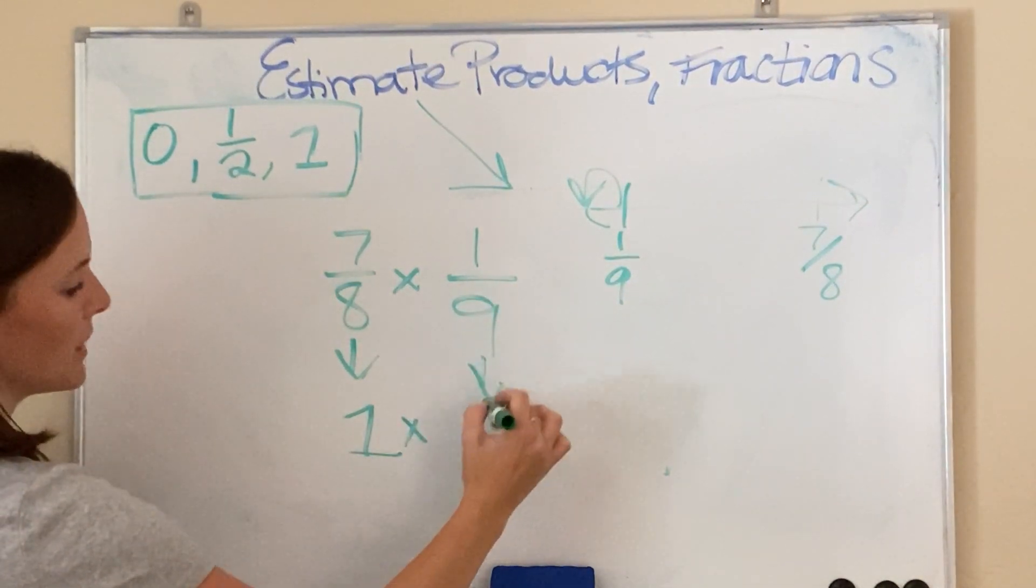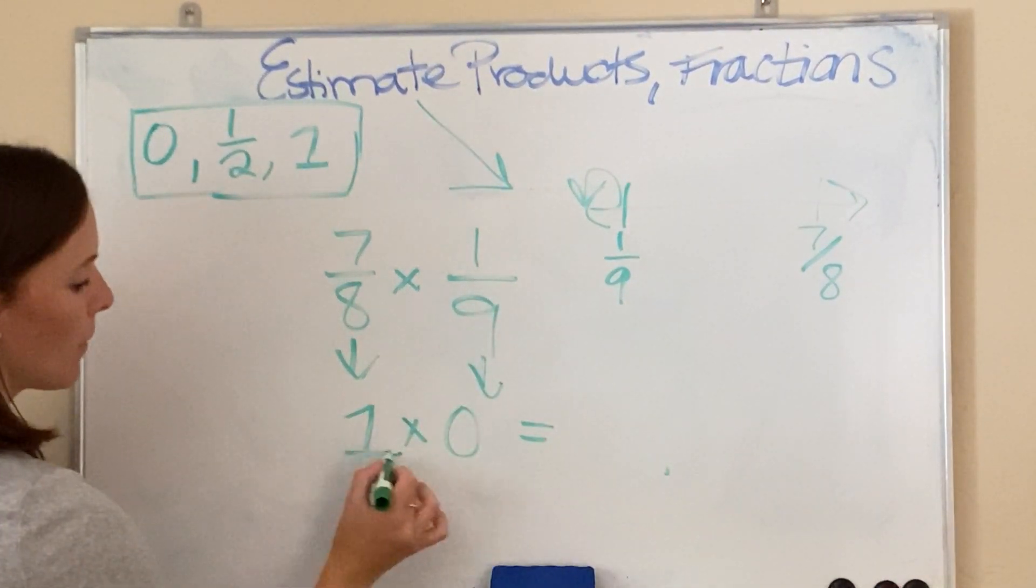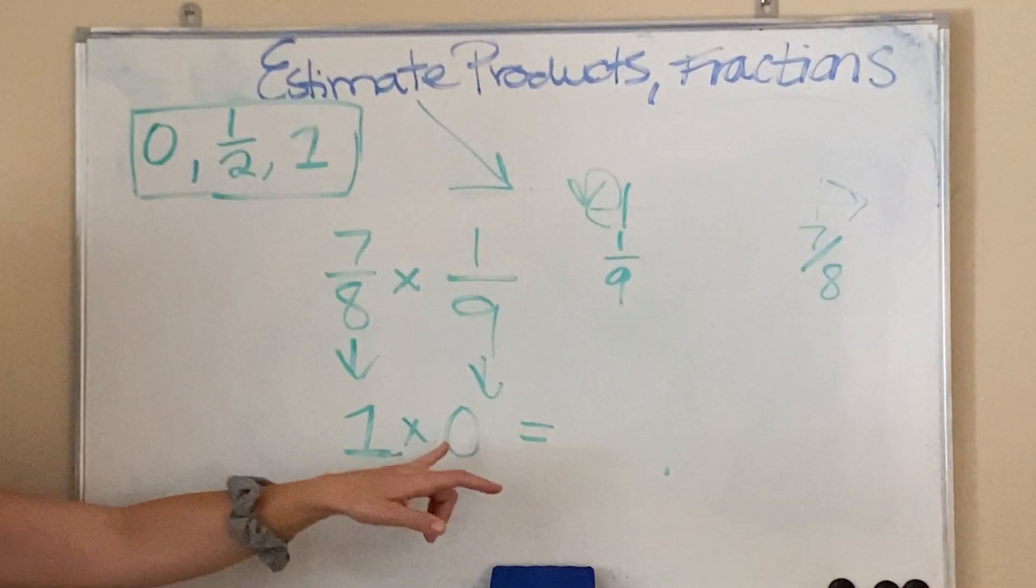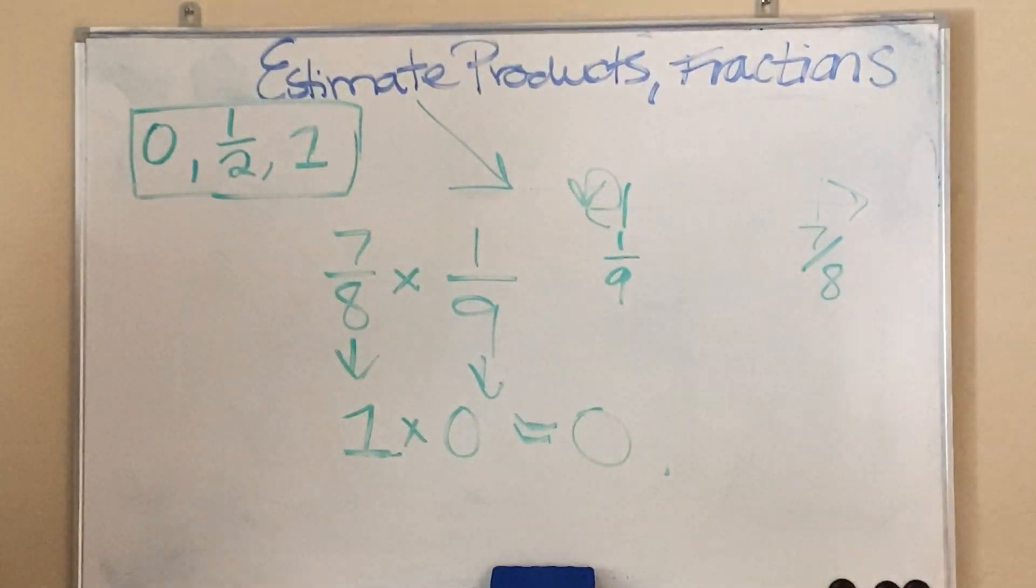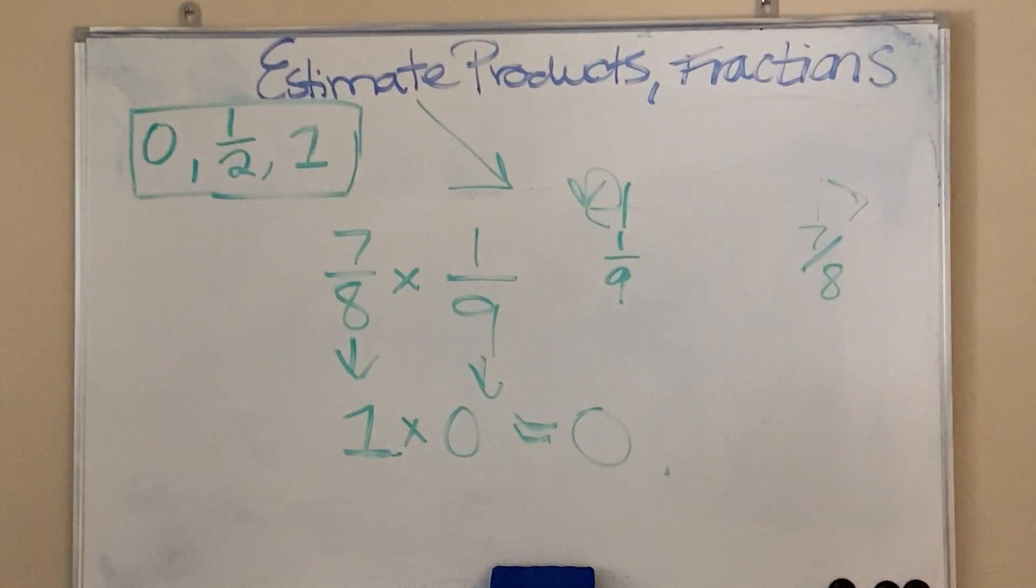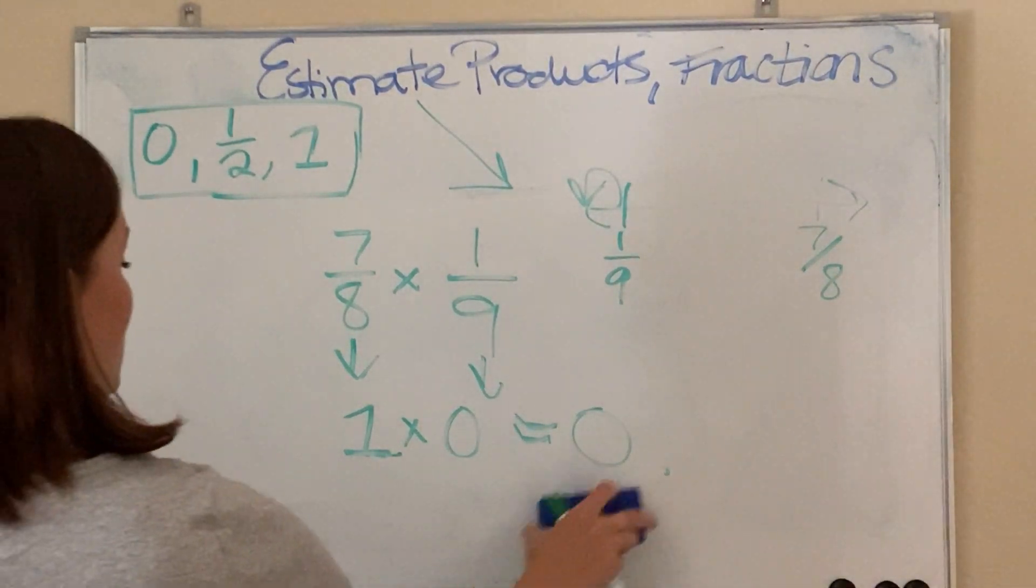So, this is going to round to a 0. All right. Anything times a 0 is 0. So, our estimated answer for this multiplication equation is 0. Now, let's see another example here.